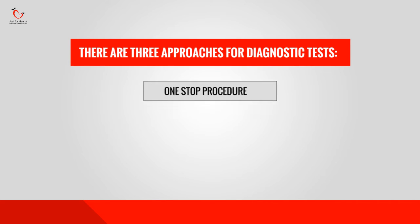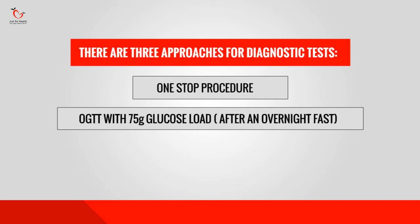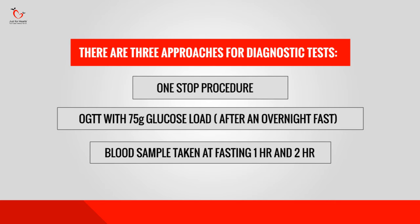The first approach is a one-step procedure, where the test is called the Oral Glucose Tolerance Test. You have to come fasting for this test — at least 10 hours of fasting — and your fasting blood sample is collected. Then 75 grams of glucose load is given to you. After that, your blood sample is collected again at 1 hour and at 2 hours after giving the glucose load, and then your blood sugar levels are measured.